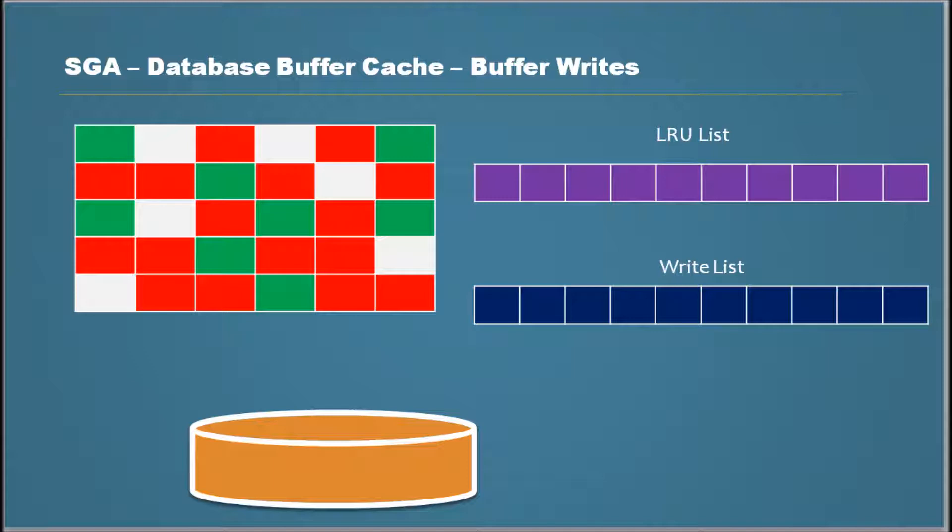In the previous video we talked about when writes occur, meaning the data from buffer getting written to the disk, the data files. We talked about a scenario where if the dirty buffers, the number of dirty buffers, go above a threshold or if the number of free buffers go below a threshold, then Oracle sends a signal.